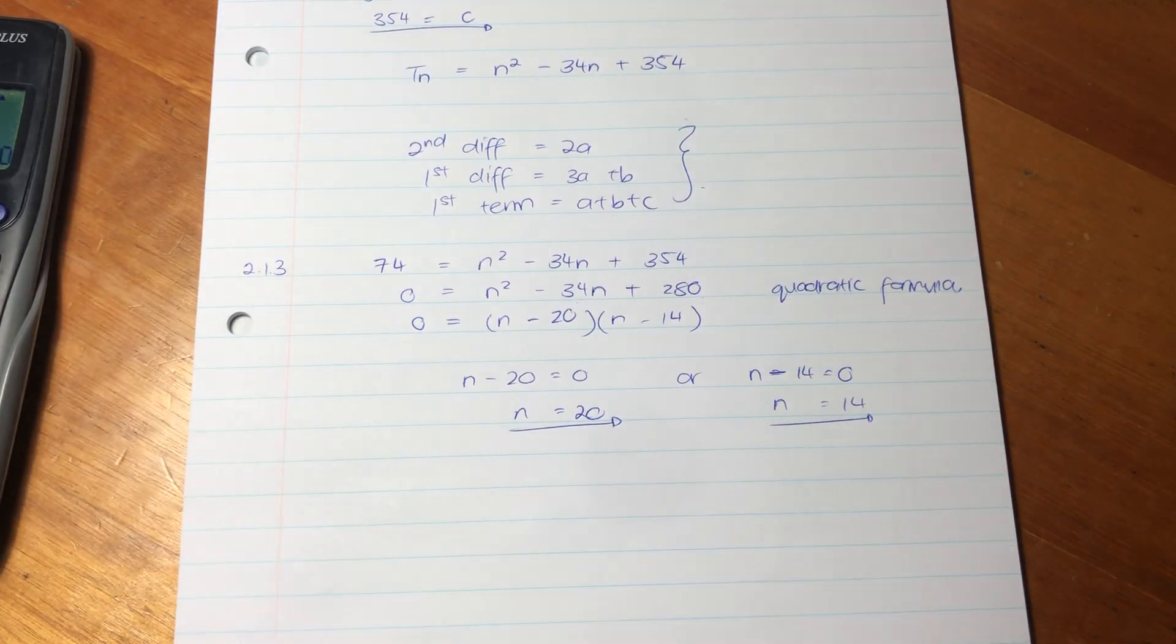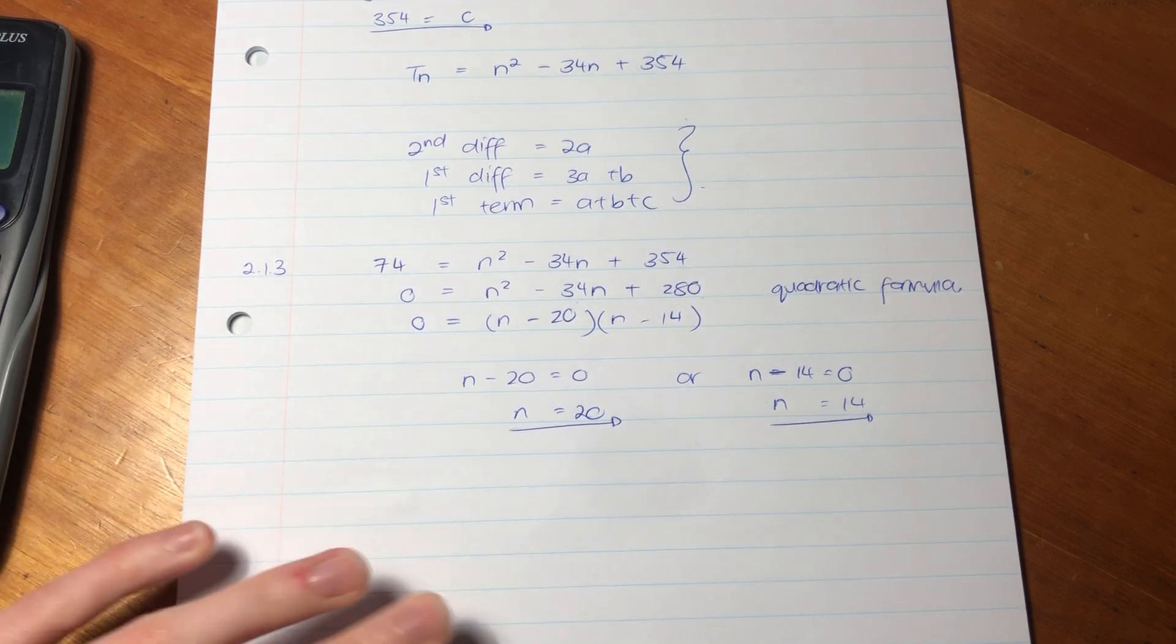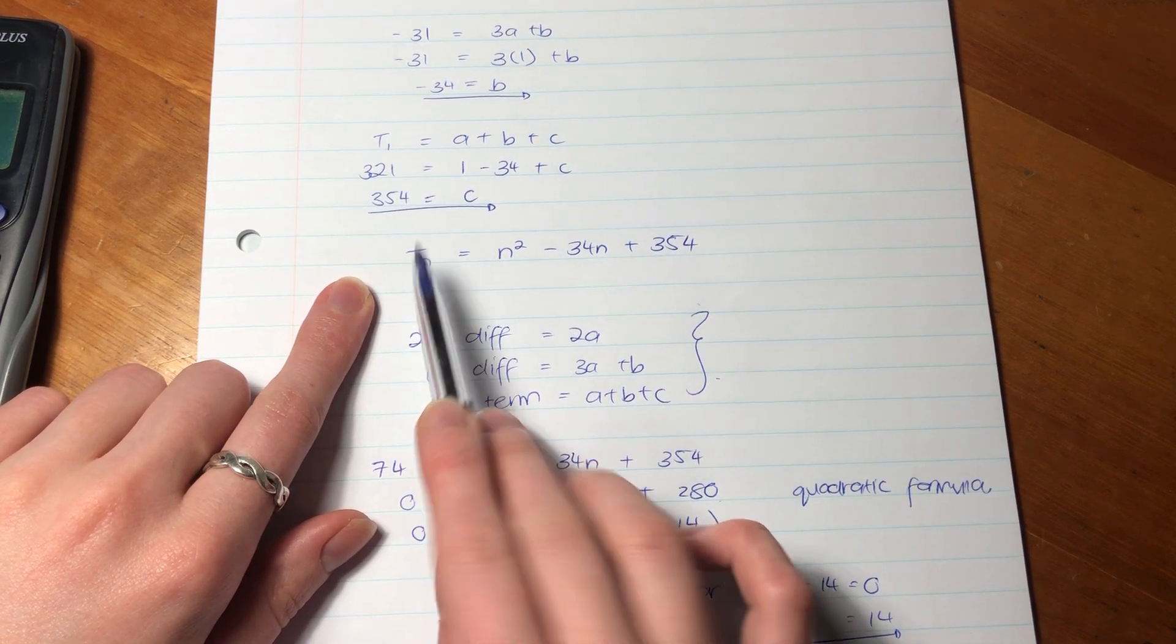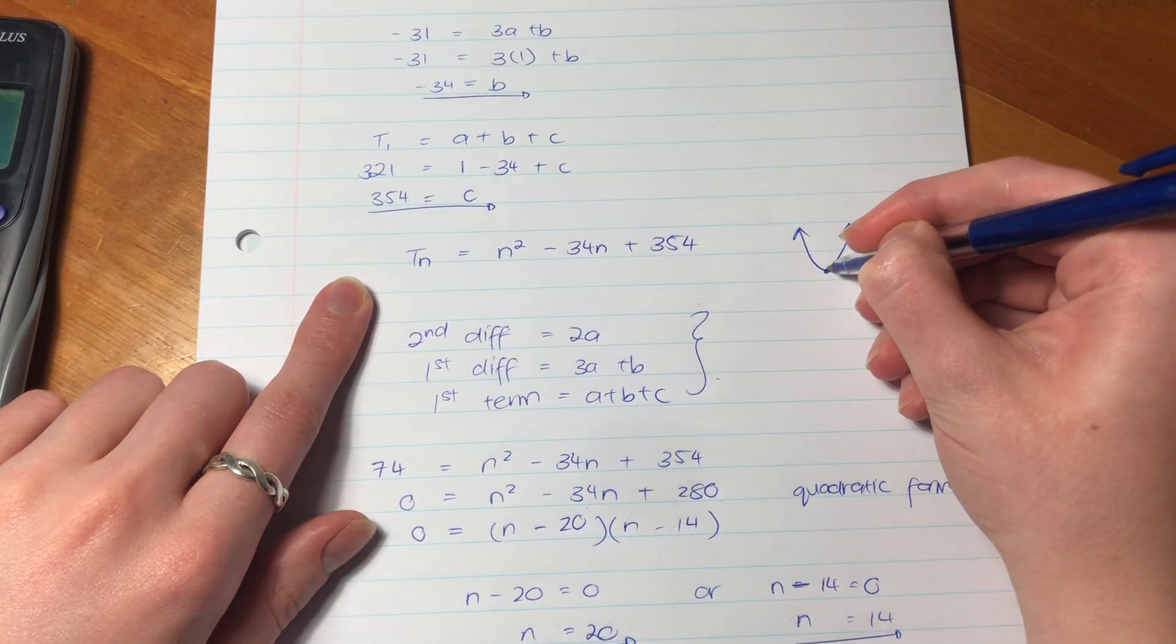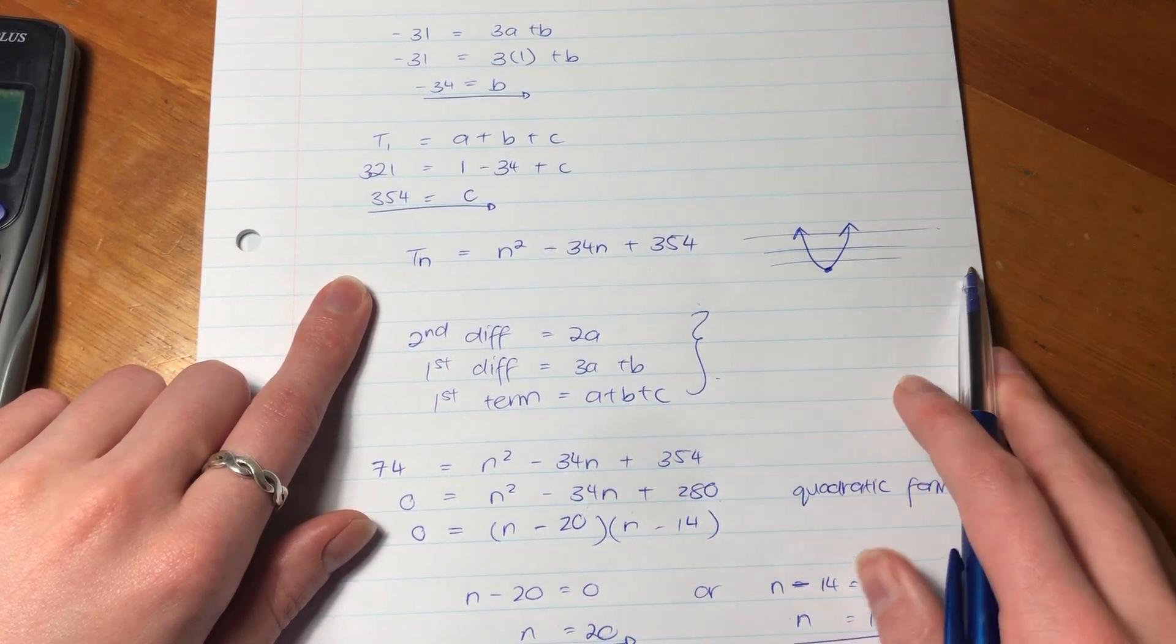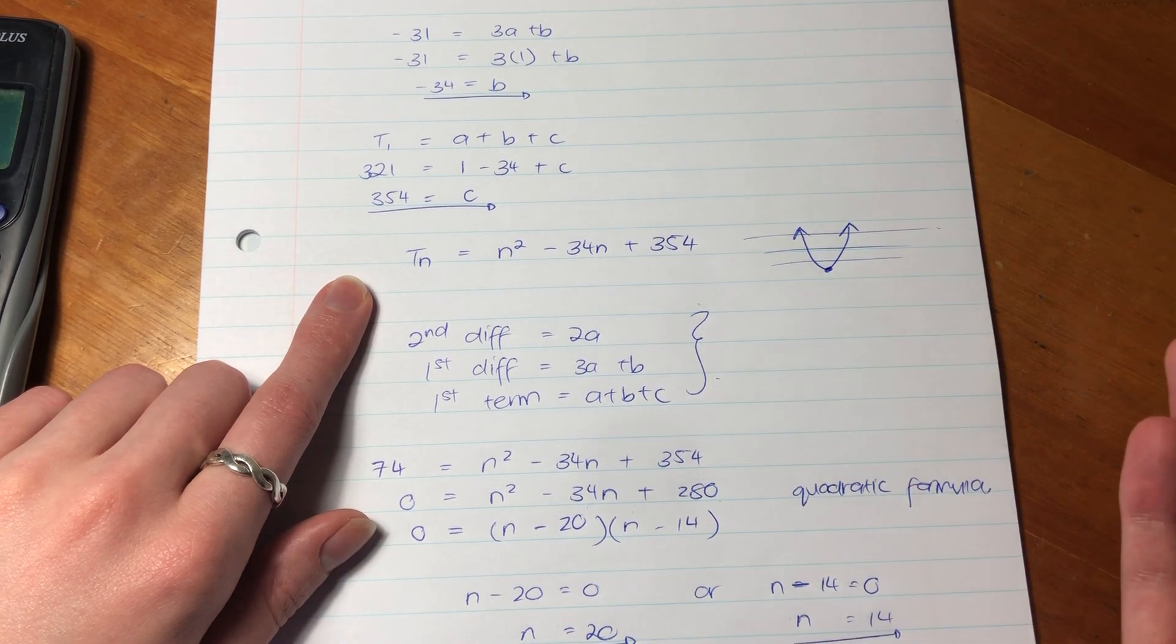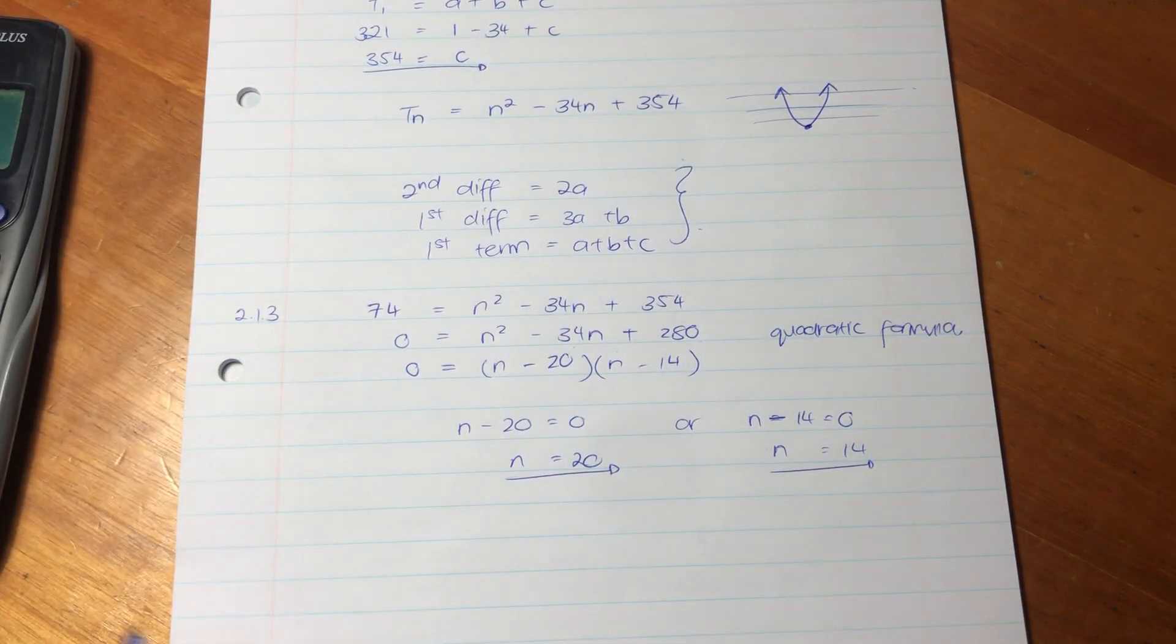Now, you might be thinking, how can that be? Like, we just showed that it's decreasing over time. But guys, importantly, don't forget your knowledge of functions. Look at this graph. It is a parabola, isn't it? And we know parabolas, especially in this case, this is a positive parabola. It's got a turning point, doesn't it? So at each point along, it's going to be repeated at some point. It's a parabola. So it makes sense that it would occur twice, because it is a parabola.